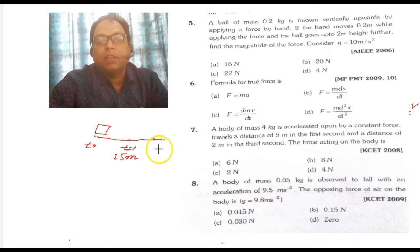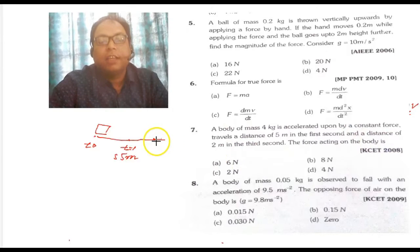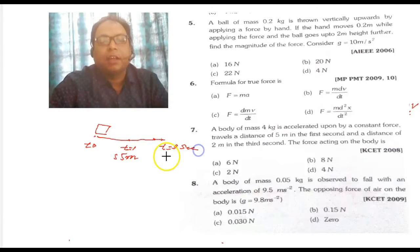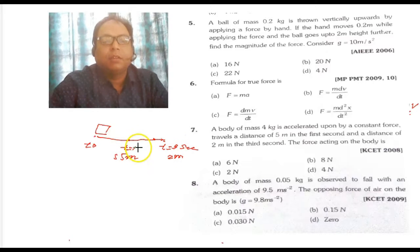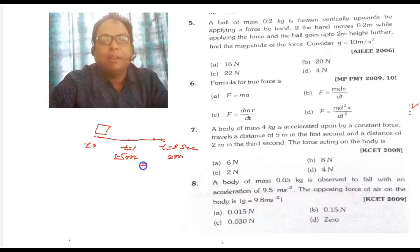The force acting in the third second gives a distance of 2 meters in the third second. So when it reaches the third second, t = 3 seconds, it travels 2 meters. This means the total distance from t=1 to t=3 will be 5 minus 2 = 3 meters distance traveled.